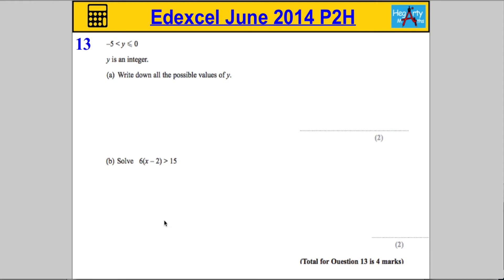Question 13. Negative 5 is less than y is less than or equal to 0, and it says that y is an integer. Write down all possible values of y. You've got to know what an integer is first and foremost. It means it's a positive or negative whole number.